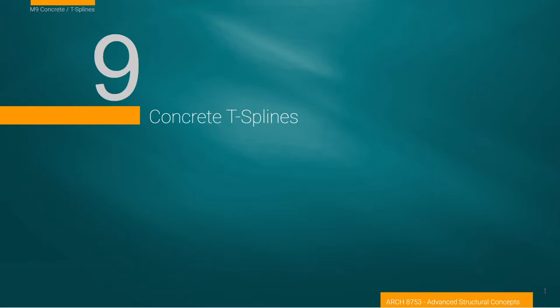I usually try to include a material and then a modeling method, and this is going to be one of the cases where this is probably the biggest stretch — concrete and T-splines. T-splines is a modeling technique. One reason for this pairing is that concrete is right now coming out of favor in construction because of the heavy CO2 footprint it emits during production. A lot of this presentation will be somewhat negative about the use of concrete, but we will spend a few case studies looking at some beautiful examples of concrete construction.